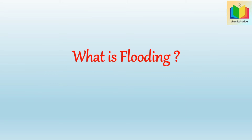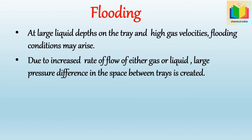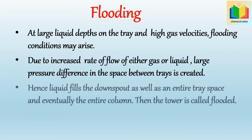What is flooding? At large liquid depths on the tray and high gas velocities, flooding conditions may arise. At this condition, due to the increased rate of flow of either gas or liquid, a large pressure difference in the space between trays is created. Hence, liquid fills the downspout as well as the entire tray space and eventually the entire column — then the tower is called flooded. Due to this, tray efficiency falls to a low value, the flow of gas is erratic, and the liquid may be forced out of the exit pipe at the top of the tower.